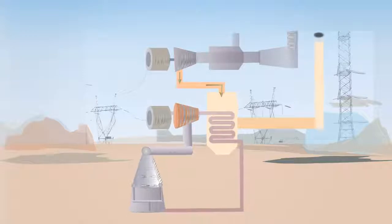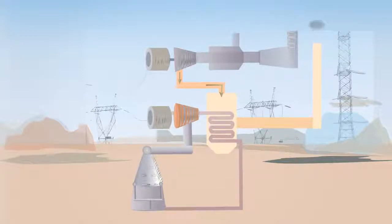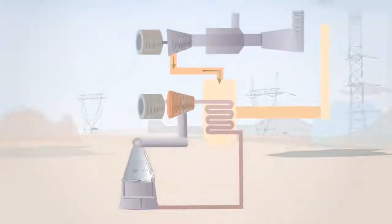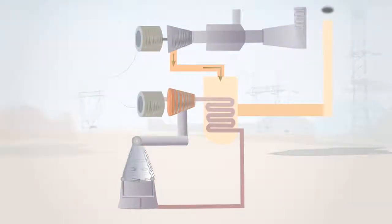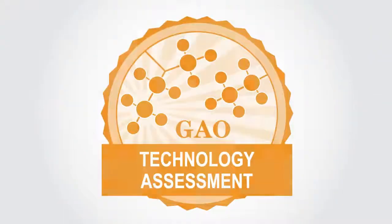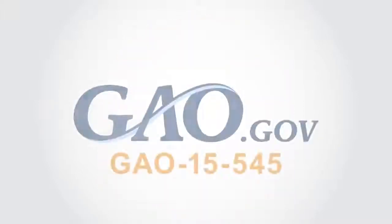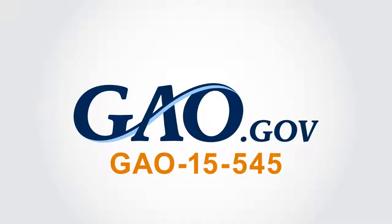A dry cooling system at a natural gas combined cycle plant uses no cooling water. Many new power plants that are being built or proposed are natural gas combined cycle plants with dry cooling systems. To learn more about how water is used in energy development, check out GAO-15-545 in the Technology Assessment section of GAO.gov.